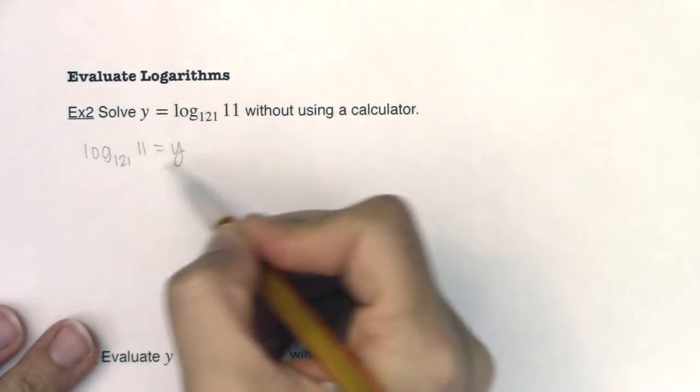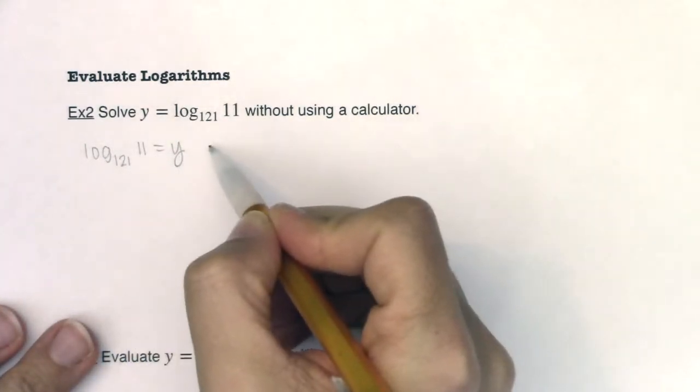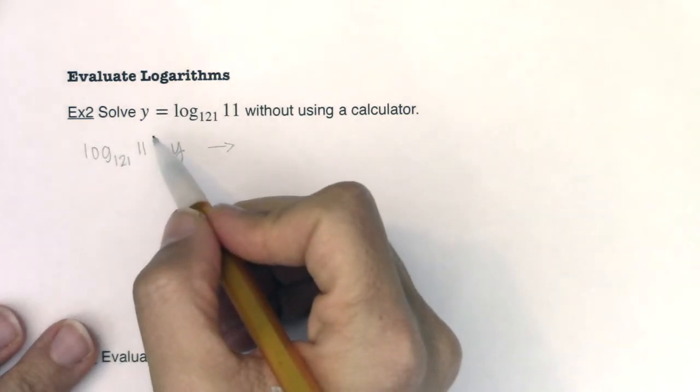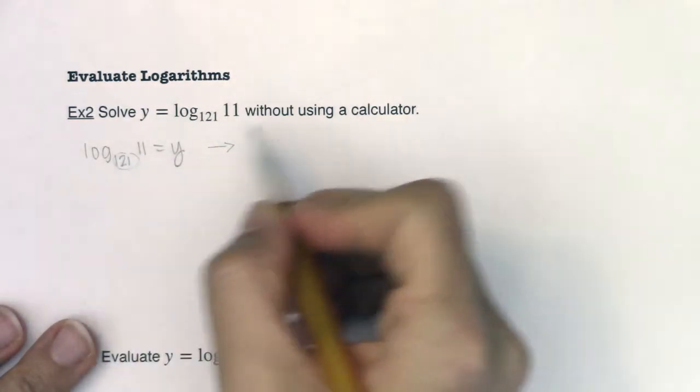What I mean here is I see this logarithmic equation, and I know I can convert it to an exponential equation. And I called that, back in example one, the circle equation. I'm going to start with 121.